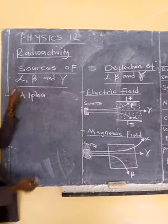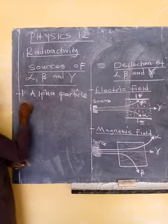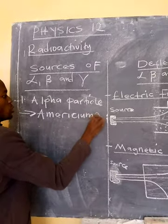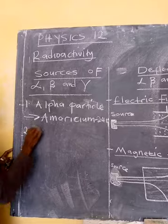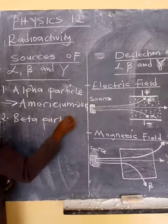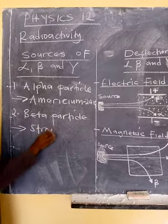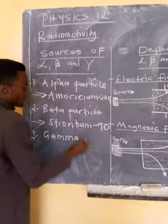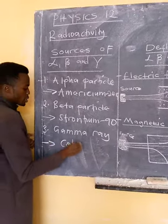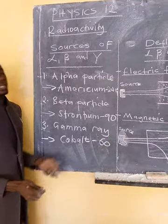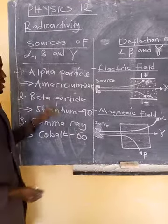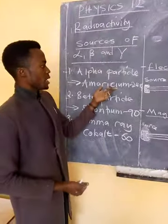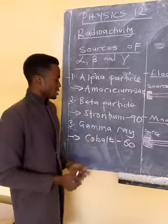For the alpha particle, the source is Americium-241. For the beta particle, the source is Strontium-90. For the gamma ray, the source is Cobalt. These are the sources for these three particles, so it's very important to remember: alpha — Americium-241, beta — Strontium-90, gamma — Cobalt.